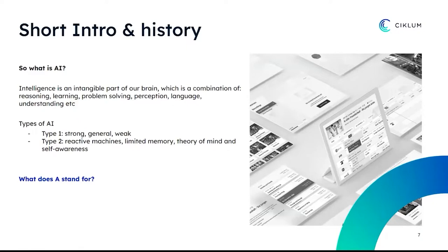A lot of people are reluctant to adopt these concepts. I want to emphasize that there are multiple types of AI. As I explored these topics, I understood that most software engines or applications that are able to take decisions — even a basic if-else clause — can be considered intelligent in some limited way. I have some articles explaining more about these types of AI, but I'll skip that for now and give you references at the end.